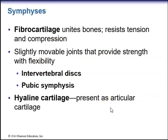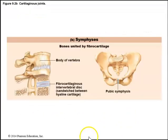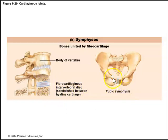Symphysis joints have fibrocartilage that unites the bones. Fibrocartilage resists tension and compression, and these slightly movable joints provide strength with flexibility — classified functionally as amphiarthroses. Examples include the intervertebral discs made of fibrocartilage and the pubic symphysis, which unites the two os coxae anteriorly. Hyaline cartilage can also be present as articular cartilage sandwiching the fibrocartilage disc.